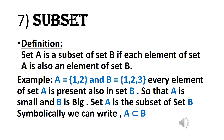Subset: Set A is a subset of set B if each element of set A is also an element of set B. For example, A = {1, 2} and B = {1, 2, 3} — every element of set A is also in set B, so A is smaller and B is bigger. Set A is a subset of set B, written symbolically as A ⊆ B.